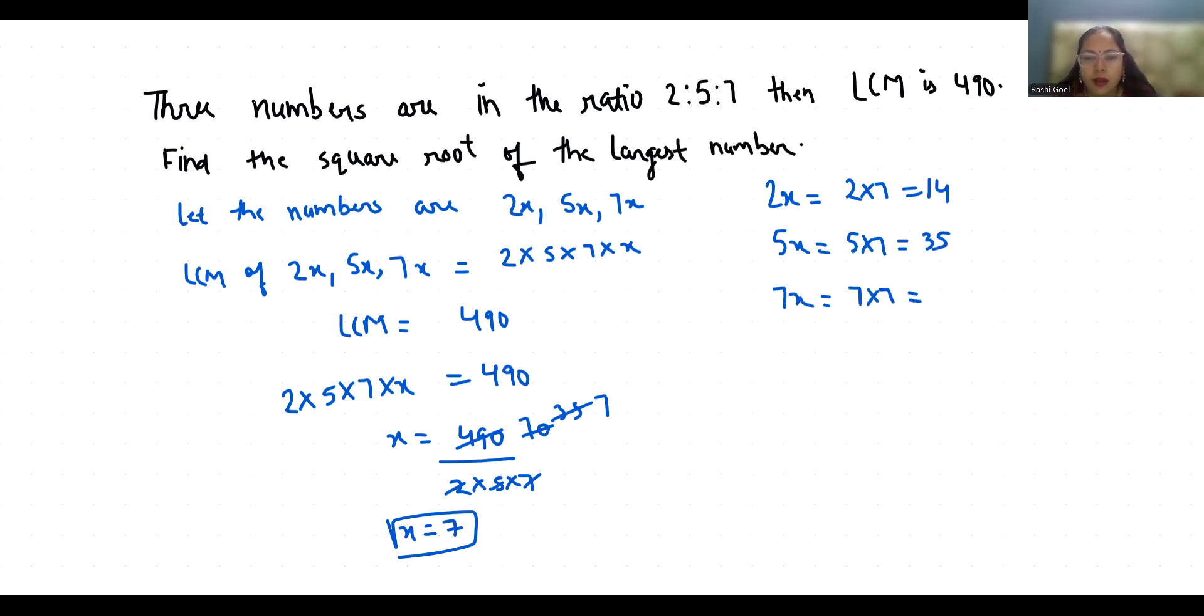Now find the square root of the largest number. The largest is 49, so square root of the largest number is 49. Square root of 49 is 7.